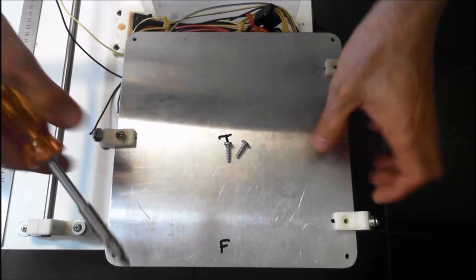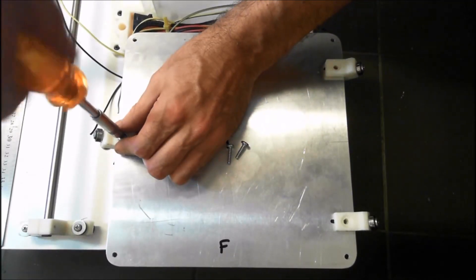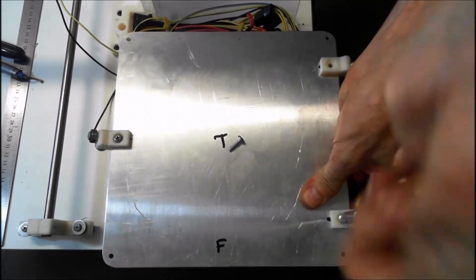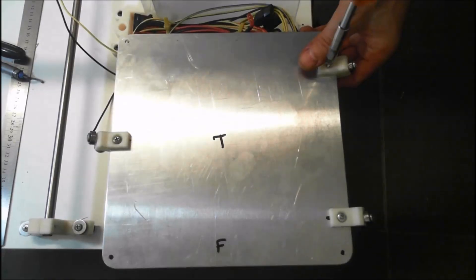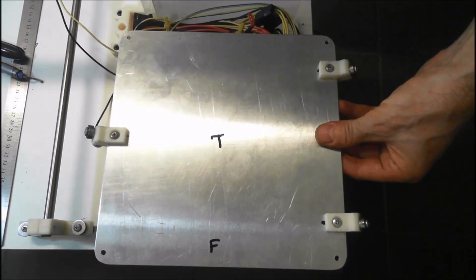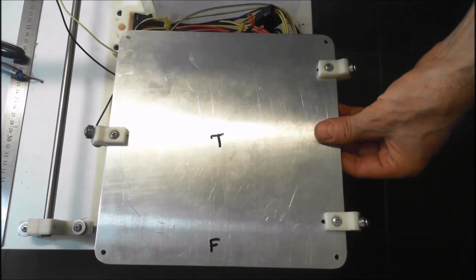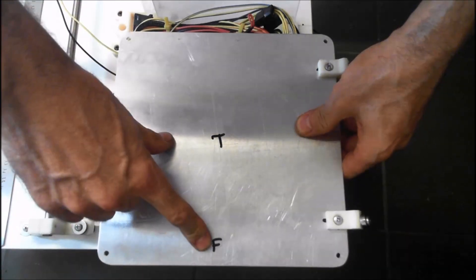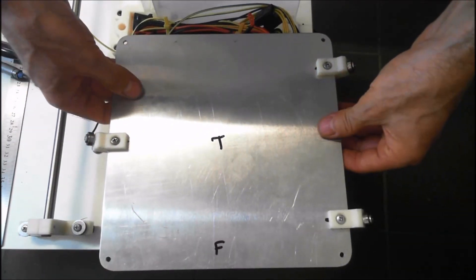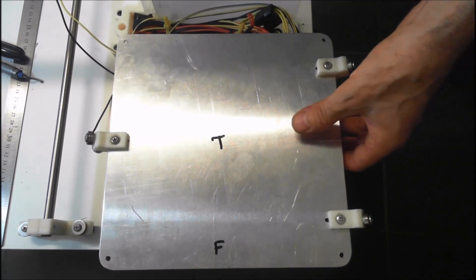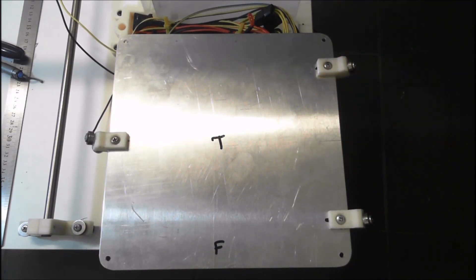We're going to install our bearing mounts and screws. We've also marked T for top and F for front, just so we keep the same orientation as we're building. We're going to install that now in between the two bars and line those up.